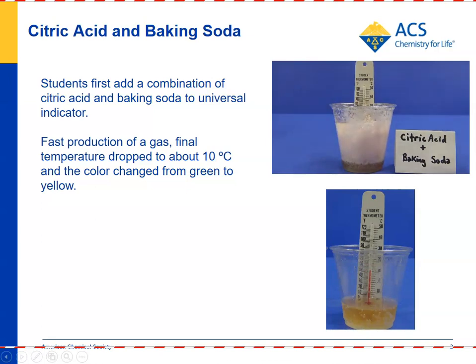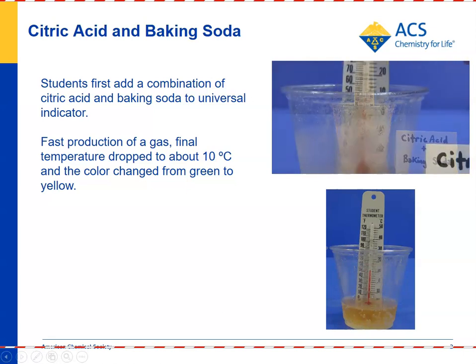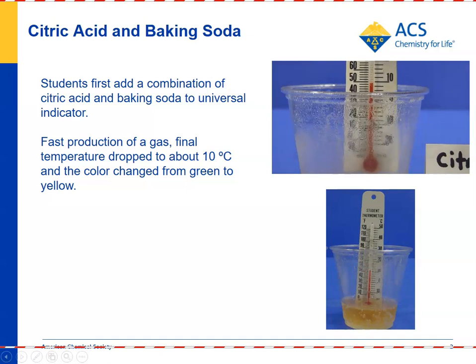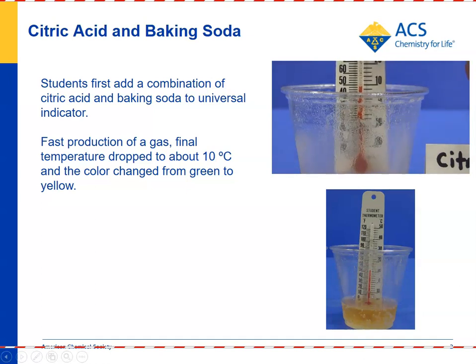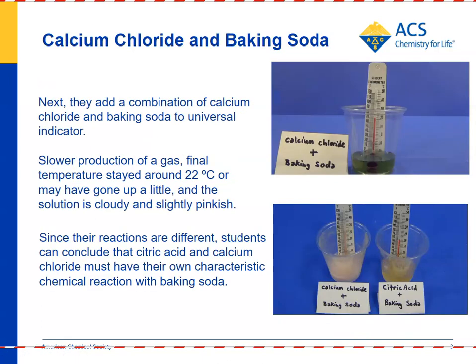There is a lot of bubbling and a color change. The temperature started at about 20 degrees and is now down to a little less than 10 degrees Celsius. So they see a color change, a production of a gas, and a change in temperature. Eventually they'll see that the green indicator solution they started with ends up yellow, which shows that it's somewhat acidic.